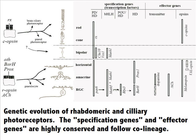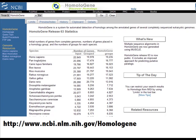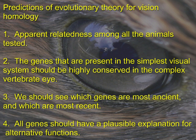What can we learn about the eye from examining the data produced by the field of comparative genomics? If the theory of common descent is true, we should see a pattern of genetic similarity that matches the stages of development of eye complexity. I've used one of my favorite metagenomic tools, Homologene, which will search the genomic databases at the NCBI for homologous genes between organisms and calculate the variation in protein sequence. If the modern theory of evolution is true, I would expect to see relatedness among all the animals tested, that genes present in the simplest visual system would be highly conserved in the complex vertebrate eye, and that we should be able to tell which genes are most ancient and which are most recent — and also find plausible alternative functions for the ancestors of the visual genes.